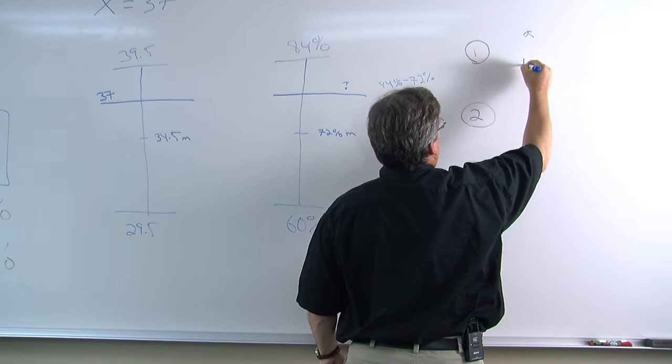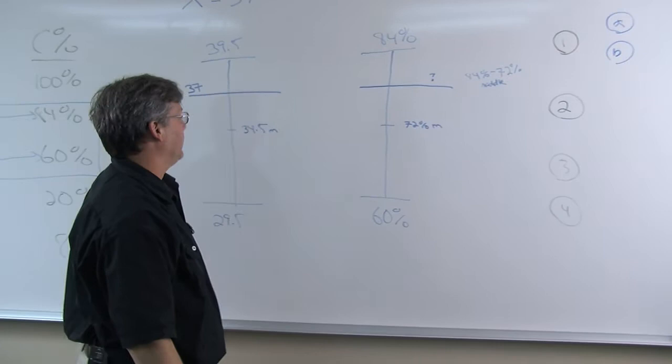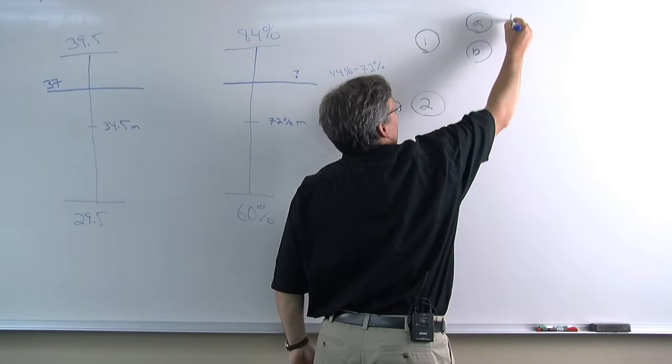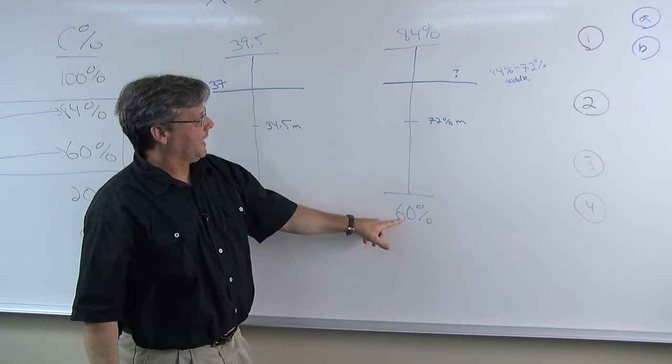For step one, we're looking for the interval widths of both scales, both A and B. A refers to the distance between the top and bottom, entire interval width of our first scale. The distance between the top of 39.5 and the bottom of 29.5 is 10 points. And then in our second scale, the distance between the top of 84 and the bottom of 60% is 24%.